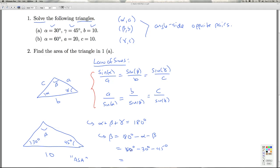And so that's going to be 150 degrees minus 45 degrees, that's 105 degrees. So that's what beta is, beta is 105 degrees.